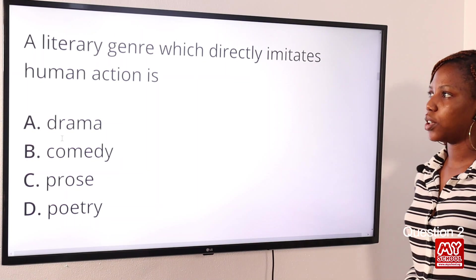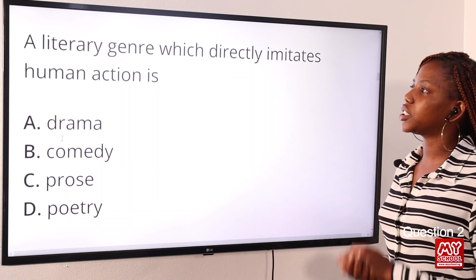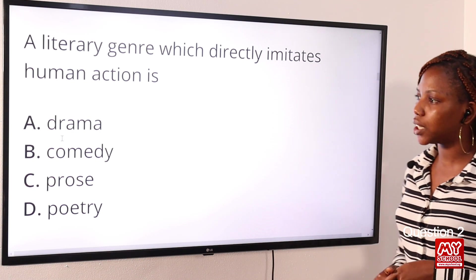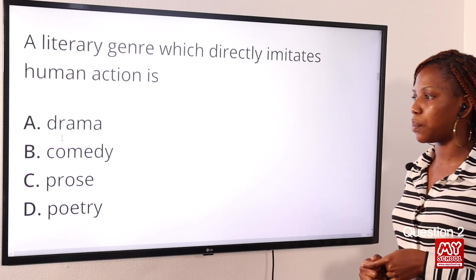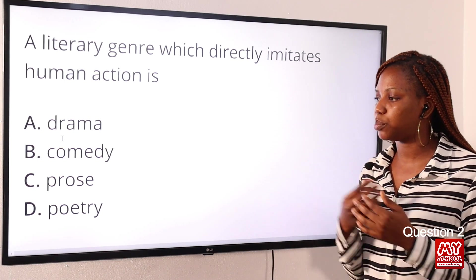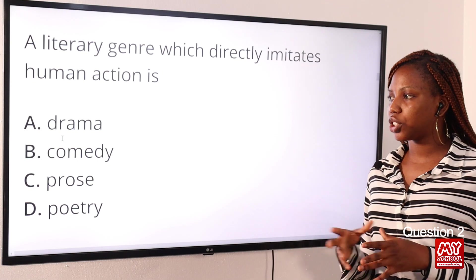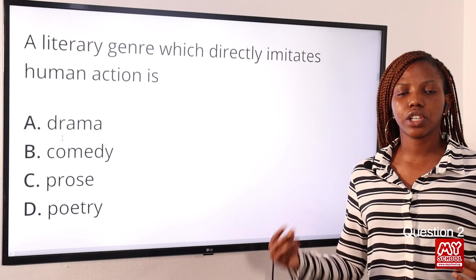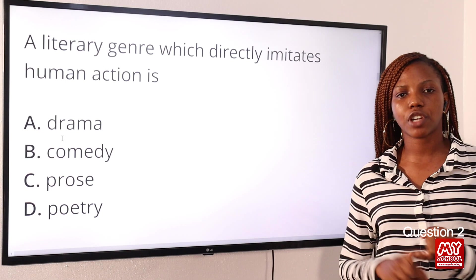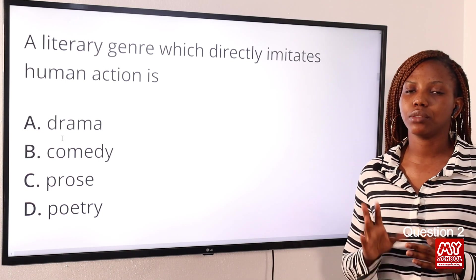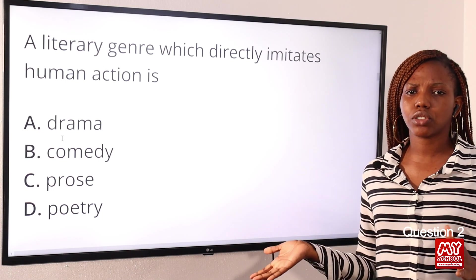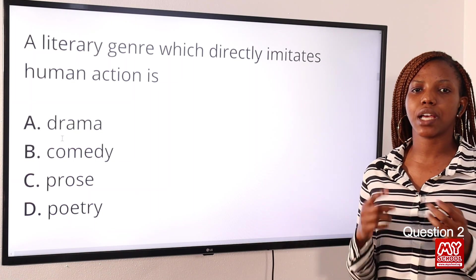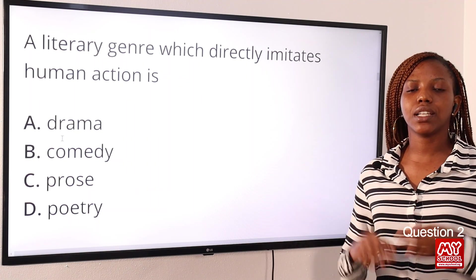Question two: a literary genre which directly imitates human action is Option A: drama, Option B: comedy, Option C: prose, Option D: poetry. Do not forget that in literature there are three genres — drama, prose, and poetry. The answer to this question is Option A: drama.